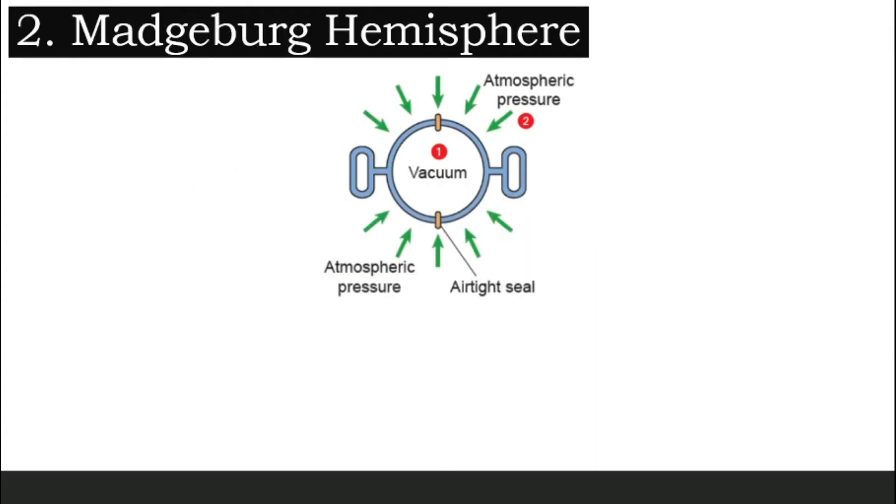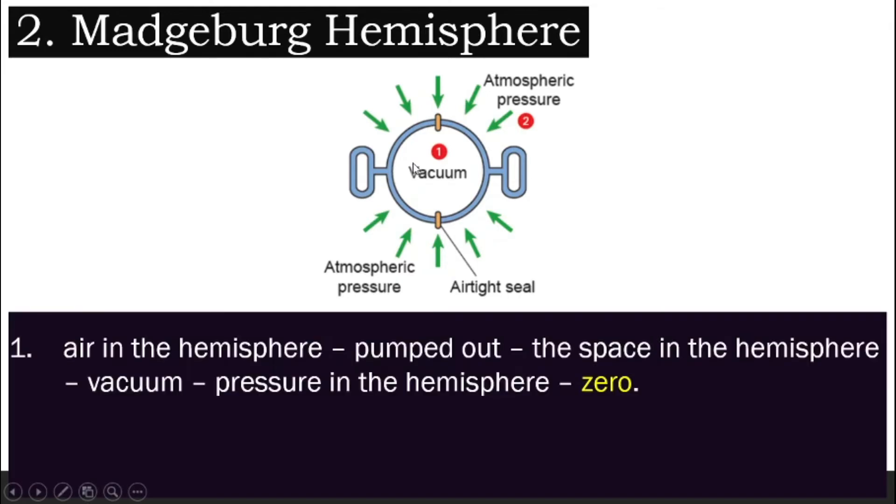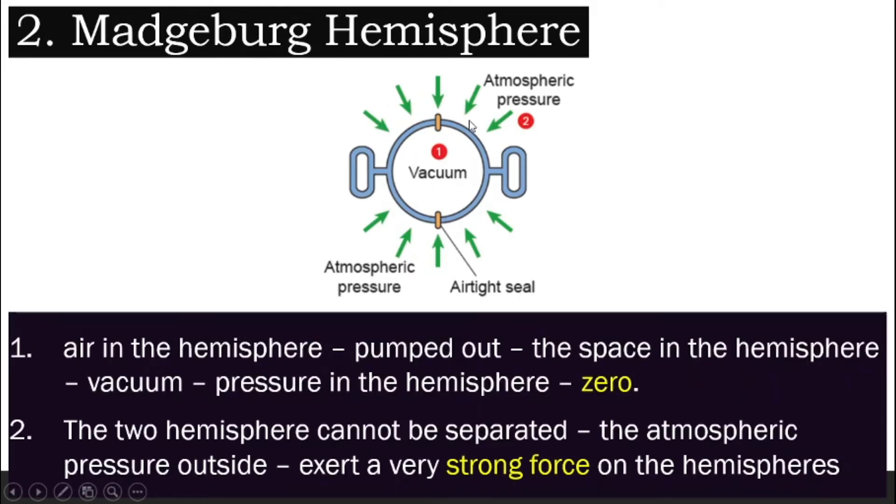How about Magdeburg hemisphere? What they do is they get two hemispheres. What does hemisphere mean? Hemisphere means half of a sphere. That means if you cut a ball into half, that is called hemisphere. You get two hemispheres, which you call the Magdeburg hemisphere and put them together. And you pump out all the air inside. You create a vacuum in this area. So what happens is inside here, there is zero air. There's nothing in there. So it is vacuum. Vacuum means there's absolutely nothing.